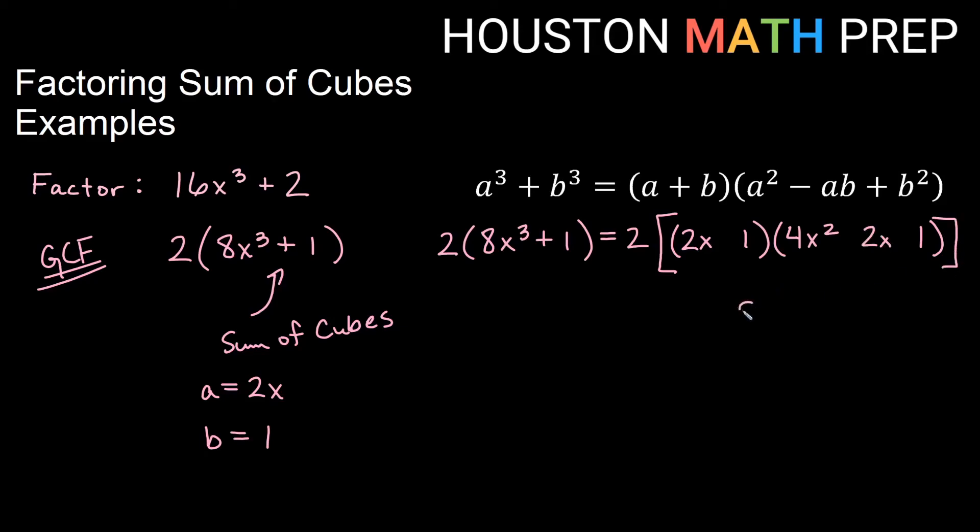Multiply in the middle. 2x times 1 gives us 2x. Using the SOAP method, same would be plus. Opposite would be minus. And always plus will give us a plus in the back.